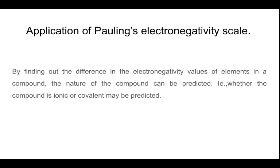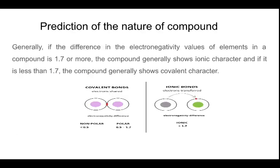Now coming on to the applications of Pauling's electronegativity scale: by finding out the difference in the electronegativity values of elements in a compound, the nature of the compound can be predicted — that is, whether the compound is ionic or covalent. Generally, if the difference in the electronegativity values is 1.7 or more, the compound shows ionic character, and if it is less than 1.7, the compound shows covalent character, as clear from the diagram.